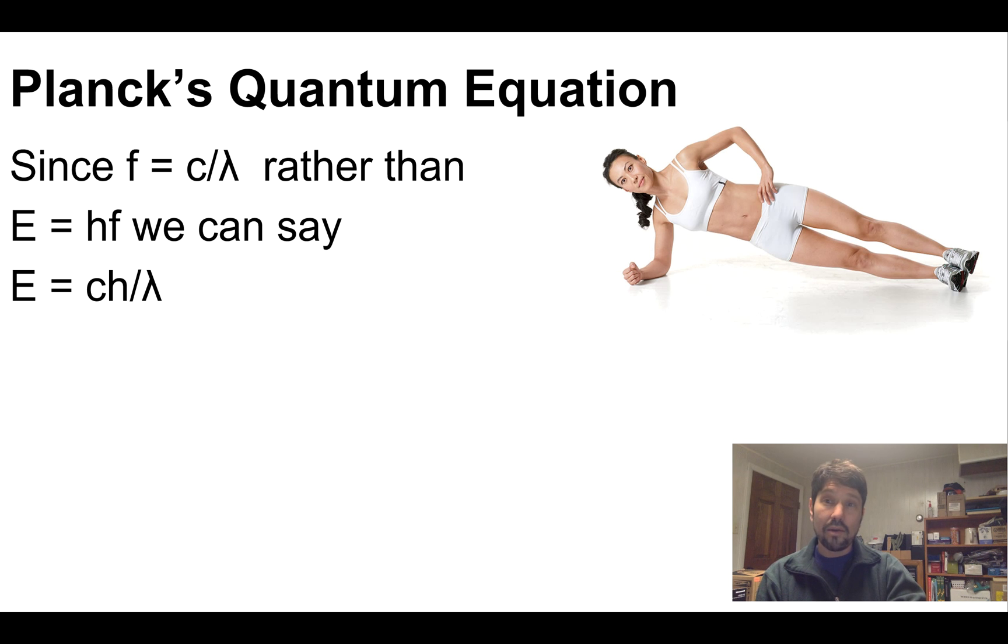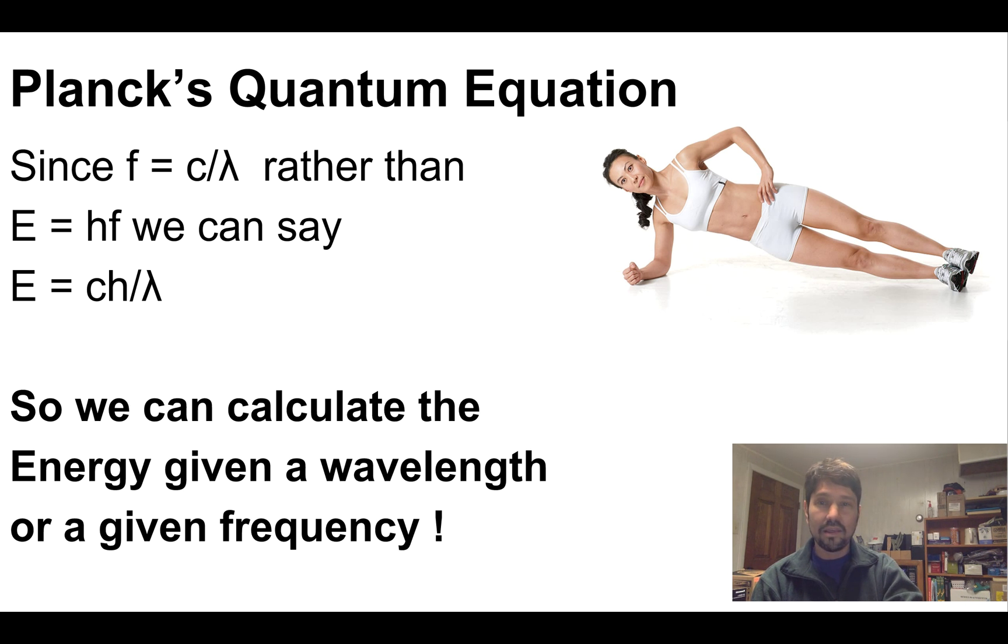Now, you remember that from the wave equation, we can say that frequency equals the speed of light divided by wavelength for any electromagnetic wave. So rather than talking about Planck's quantum equation as energy equals Planck's constant times frequency, we can turn it around and say energy equals speed of light times Planck's constant divided by wavelength. So we can calculate the energy given a wavelength or given a frequency.